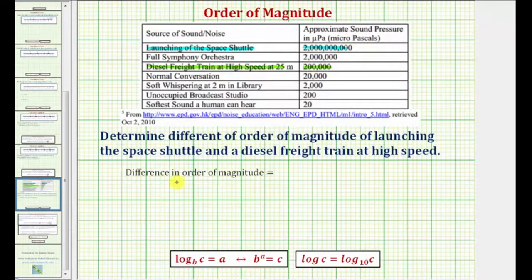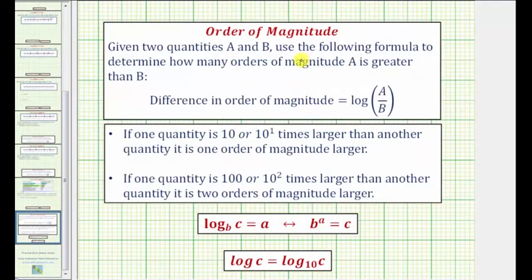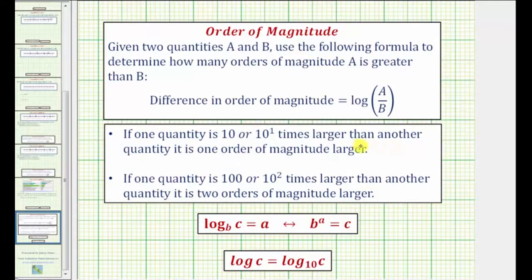Now let's review how to determine the difference in order of magnitude. Given two quantities A and B, we use the following formula to determine how many orders of magnitude A is greater than B. The difference in order of magnitude is equal to the common log of A divided by B. If one quantity is ten times, or ten to the first times larger than another quantity, it is one order of magnitude larger.